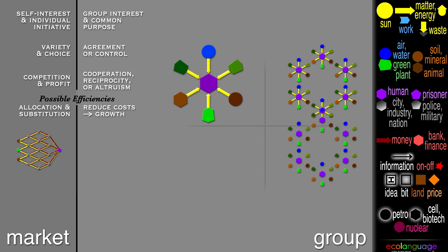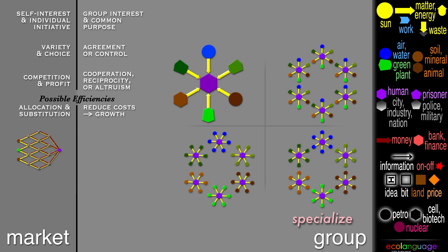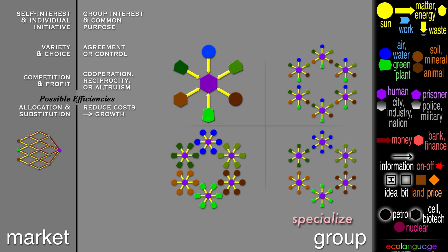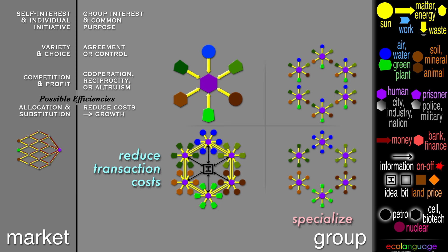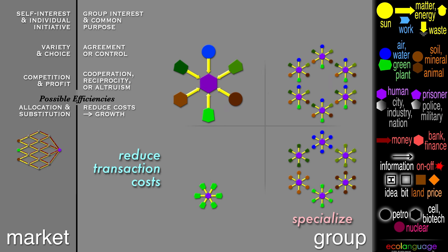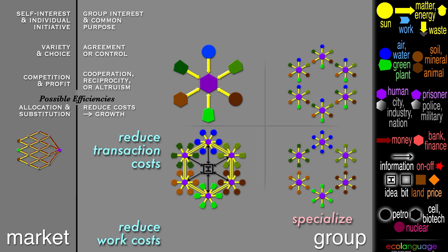So if everyone, instead of trying to work on everything, specializes, then they can increase their own inputs even better, and then after they trade, they all can have more of everything. Look at the levels: the whole group has rules to reduce transaction costs of each trade, while at the individual level each one tries to reduce work costs. And in between the two cost reductions is another source of growth, called the gains from specialization and trade, because they all can have more of everything.